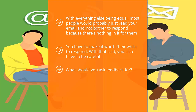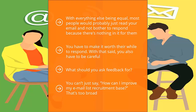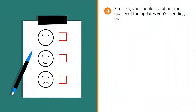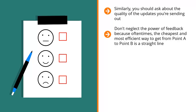What should you ask feedback for? Ask how your squeeze page can be made better, but break down the squeeze page elements one by one. Don't just say 'how can I improve my email list recruitment page' — that's too broad. Instead, look at different elements: ask 'am I using the right graphic?', 'is the text easy to understand?', 'is the value proposition behind the incentive very clear?' Similarly, ask about the quality of updates you're sending out — specifically, what improvements should you make for them to forward your emails to people they know. Don't neglect the power of feedback.